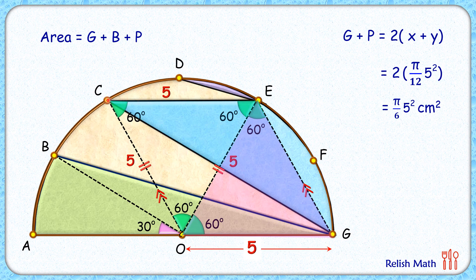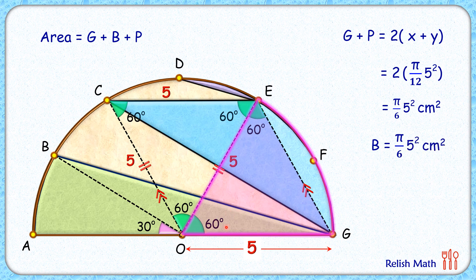Or this blue area which we had to find, CEFG, this area will be the same as the area of this sector OEFG. And the area of this sector we know is nothing but 60 upon 360 into πr², or π/6 times 5².